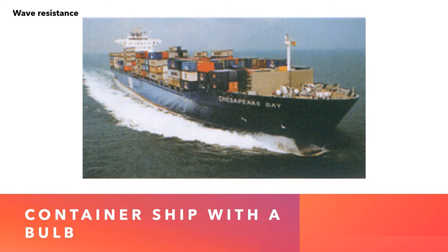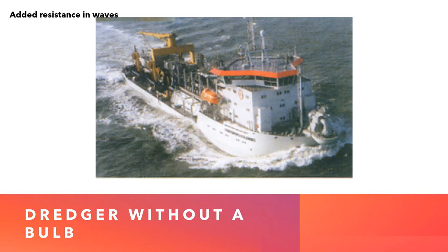The bulbous bow generates its own wave system, and the ship's wave system created by the waves at sea — they neutralize each other. The fourth type of resistance is the added resistance in waves. This type of resistance is caused by the pitching, heavy heaving, and rolling of the ship during rough seas, stormy weather, or even heavy swells.